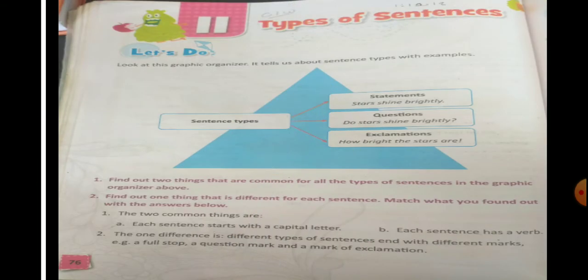Now you can turn to page number 76. On page number 76 we have got a graphic organizer, so it is presented in a graphic form. We have got sentence types or the types of sentences, and below that there are three categories. The first one is statement, the next one is questions, and the third one is exclamations.